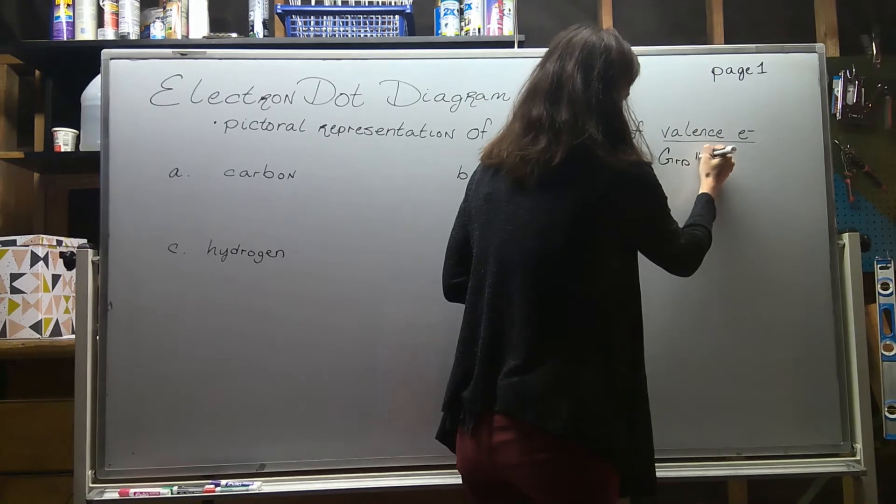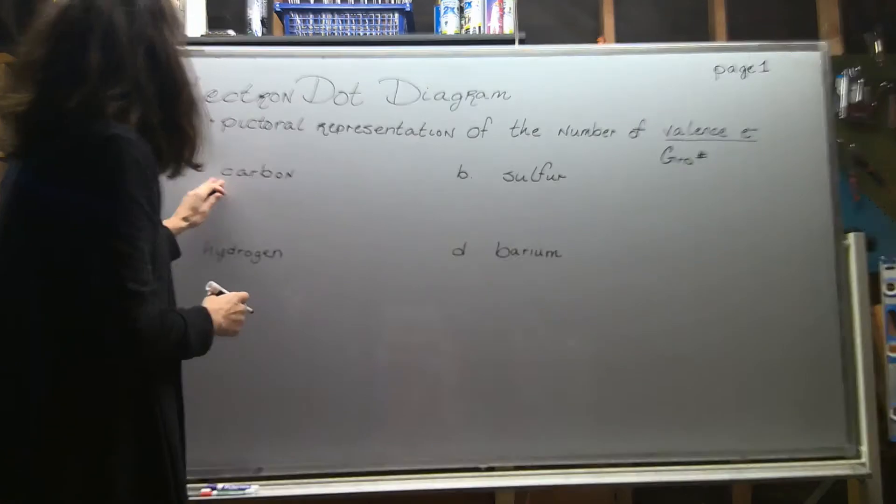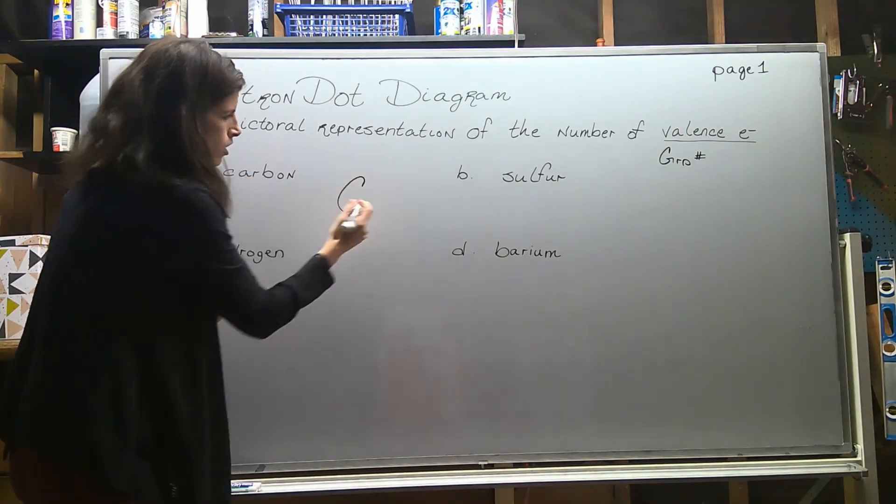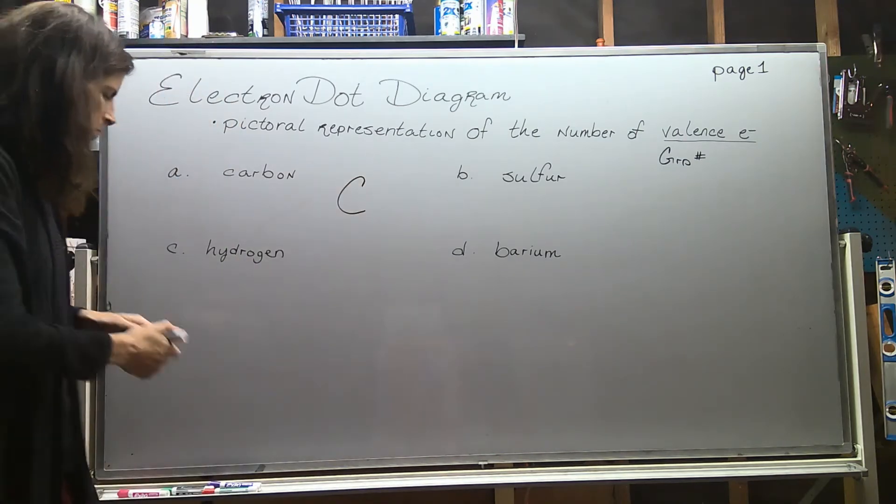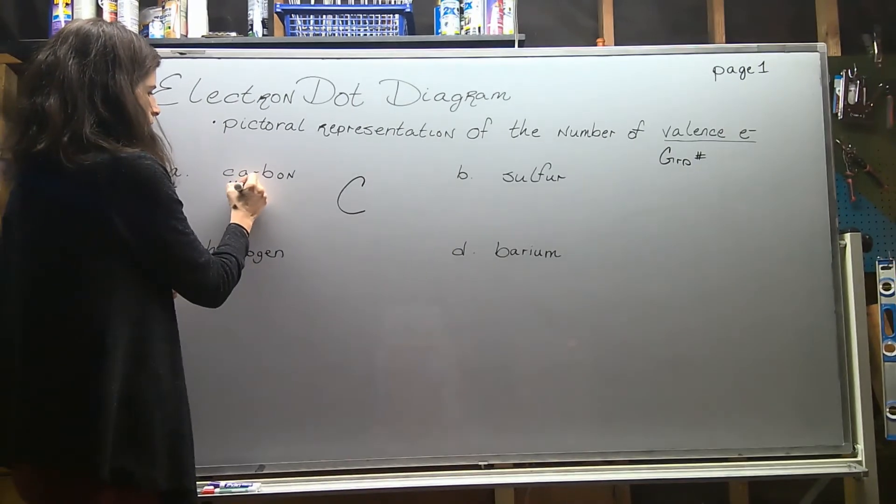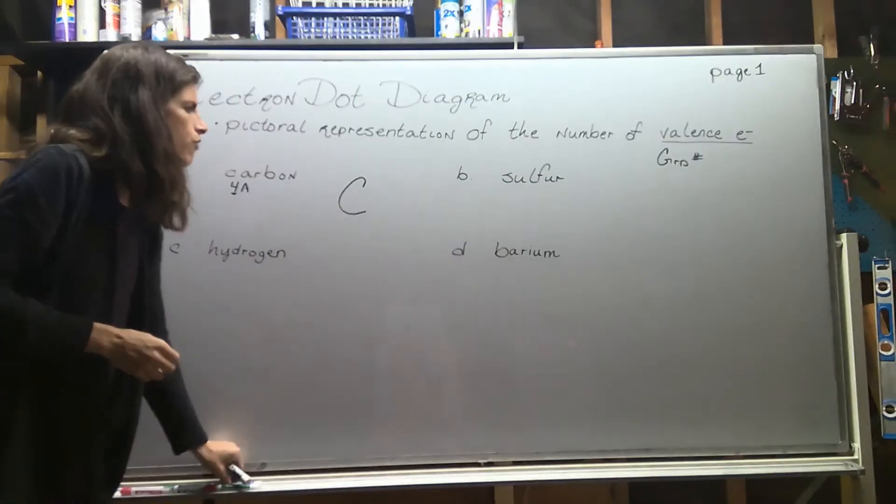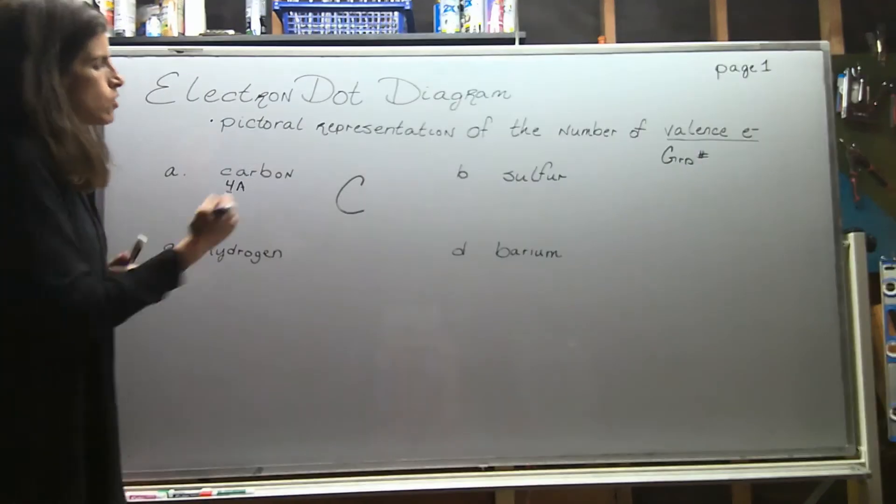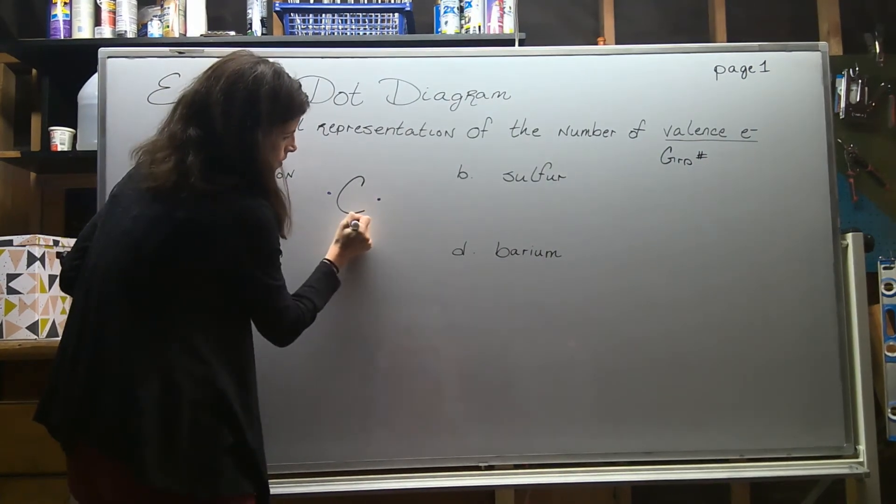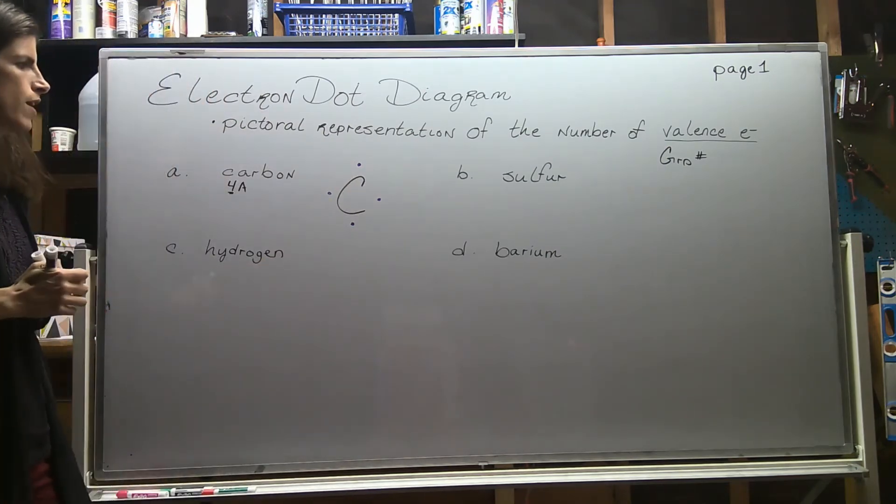We're looking at the columns in the periodic table. Let's start with carbon. When you're drawing these dot diagrams, you're going to put the elemental symbol. If I look at carbon, I see that it's in group 4A, so that means it has four outside electrons, four valence electrons. I'm going to draw one, two, three, four dots around carbon to represent those four valence electrons.